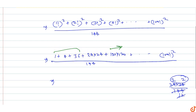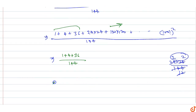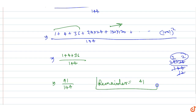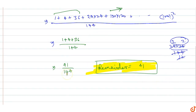So we only need to consider the terms less than 144. The sum of the first three terms is 1 plus 4 plus 36 divided by 144. One plus four is five, five plus thirty-six is forty-one. So the remainder when dividing by 144 is forty-one. Therefore, the remainder is 41. This is the answer for this question.